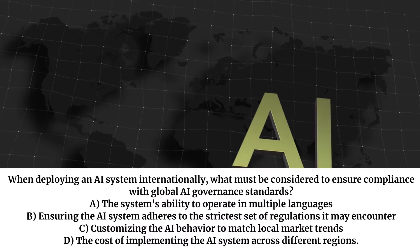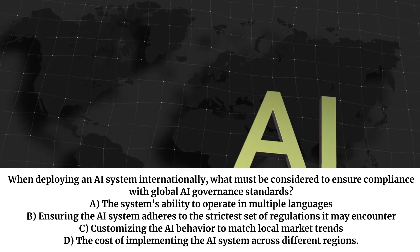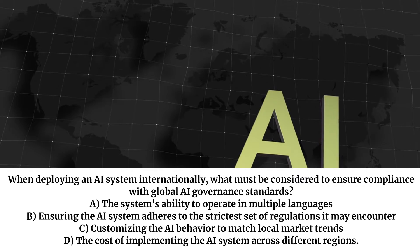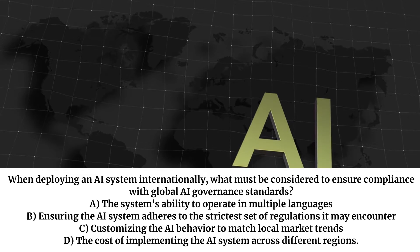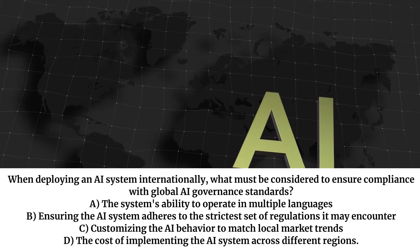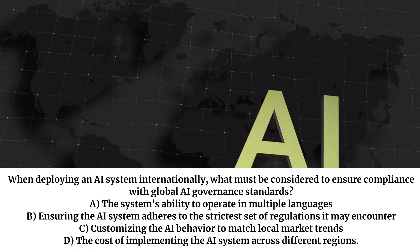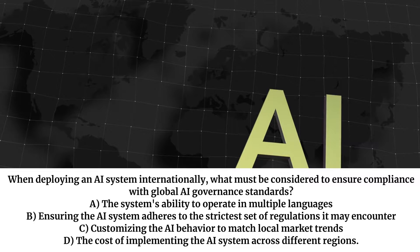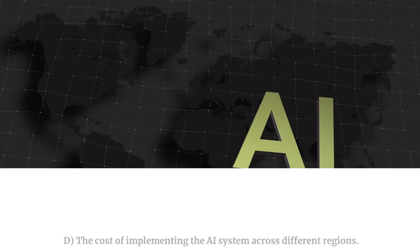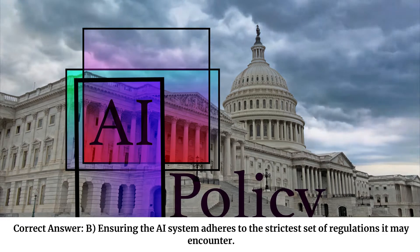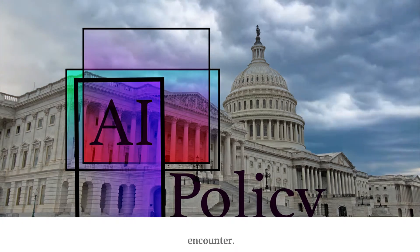When deploying an AI system internationally, what must be considered to ensure compliance with global AI governance standards? A. The system's ability to operate in multiple languages. B. Ensuring the AI system adheres to the strictest set of regulations it may encounter. C. Customizing the AI behavior to match local market trends. D. The cost of implementing the AI system across different regions. Correct answer: B. Ensuring the AI system adheres to the strictest set of regulations it may encounter.